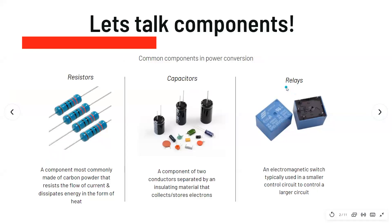The first three components we'll be talking about are resistors, capacitors, and relays. A resistor is typically made out of carbon powder and it resists the flow of current — it impedes current by dissipating energy in the form of heat. A capacitor is a component with two conducting plates separated by an insulating material, on which we collect and store electrons. A relay is an electromagnetic switch typically used in a smaller control circuit to control a larger circuit or larger power load.